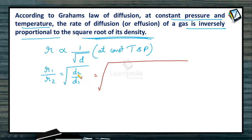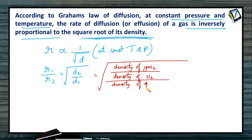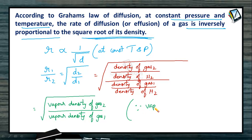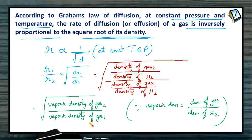We can rewrite this by dividing the density of each gas by the density of hydrogen. So R1/R2 = √[(D2/D_H2) / (D1/D_H2)]. Since vapor density is defined as the ratio of the density of a gas to the density of hydrogen, in place of density of gas upon density of hydrogen, we can write the vapor density of gas 2 upon the vapor density of gas 1.